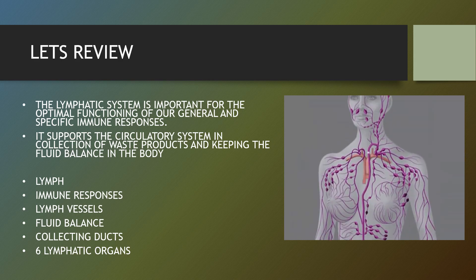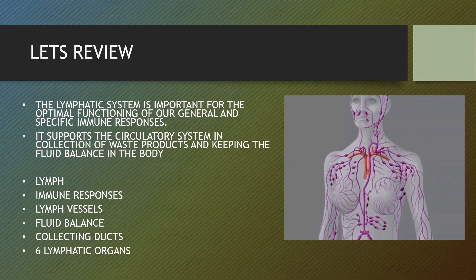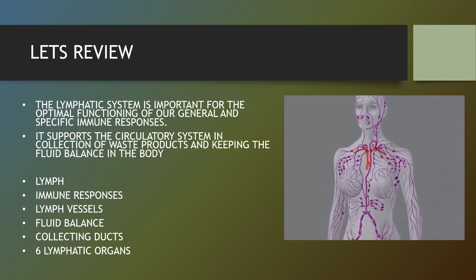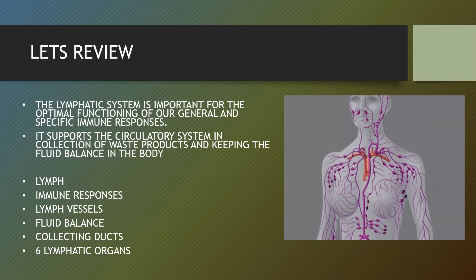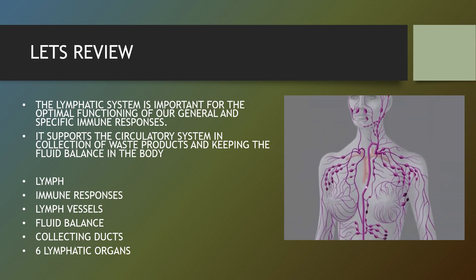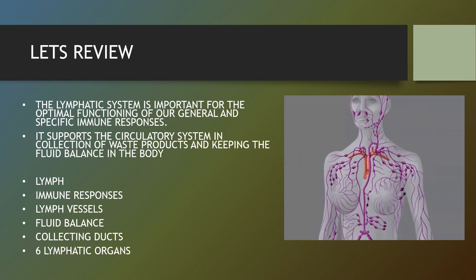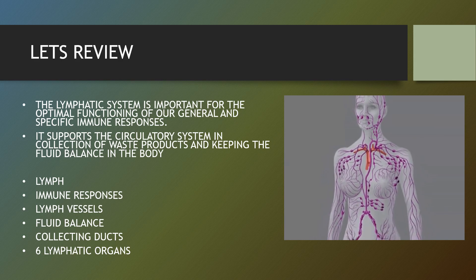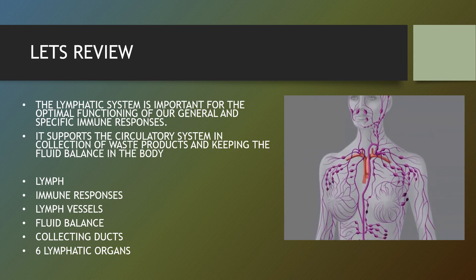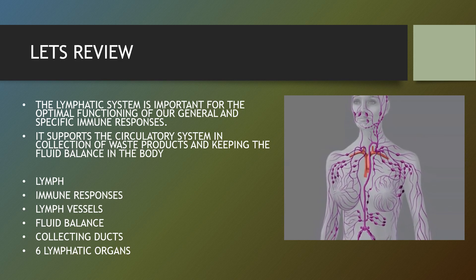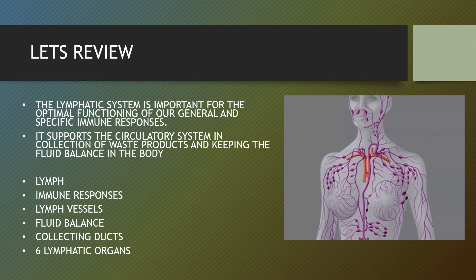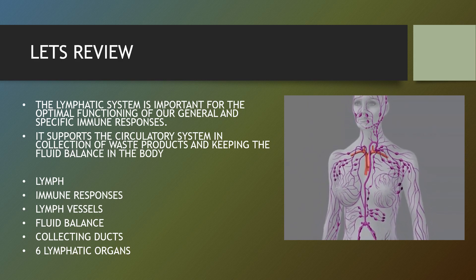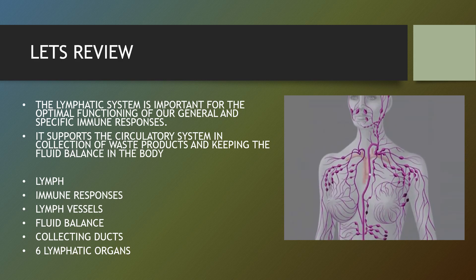Six lymphatic organs include: bone marrow, which is a spongy-like tissue found inside the bones; the thymus, located behind the breastbone above the heart; lymph nodes, which are small bean-shaped tissue found along the lymphatic vessels; the spleen; the tonsils; and the mucous membranes that line various cavities in the body and cover the surface of internal organs. I hope you have enjoyed this lesson and now have a better understanding of the lymphatic system. Thank you for listening.